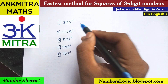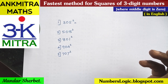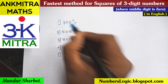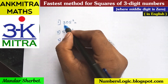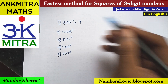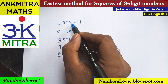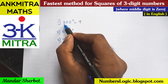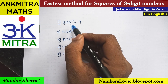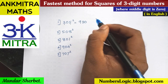Let's start with the first example: 305 squared. We go straight to the final answer. The first step is to write down the square of the leftmost digit. The leftmost digit is 3, and the square of 3 is 9. The next step is to find the product of the two end digits and double it. The end digits are 3 and 5; their product is 15, and double of 15 is 30.